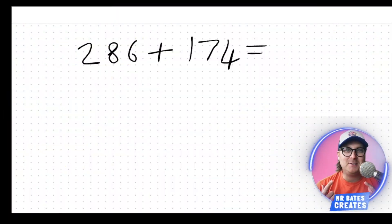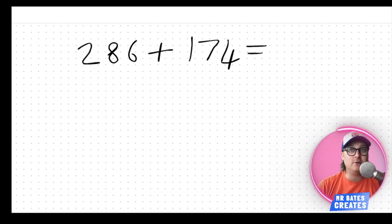So here we go, we're going to be doing a three-digit add a three-digit number today and we're going to be putting that into a column format. At the moment it's in a number sentence going from left to right and we can read it like a sentence.